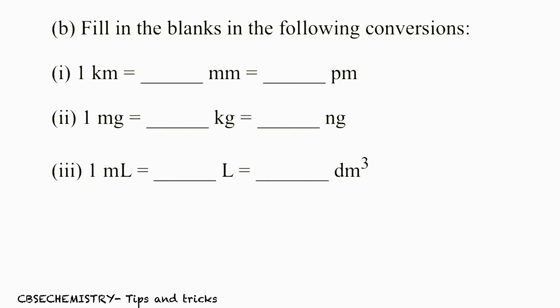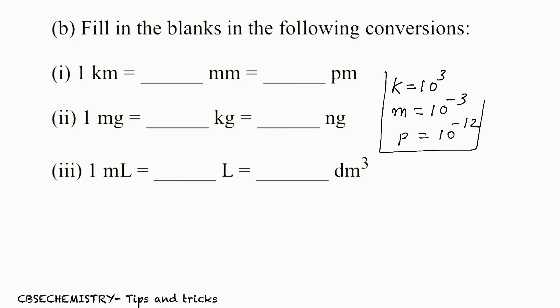For doing this, first of all you must know the prefixes. Kilo means 10 raised to 3, represented by letter K. Milli is 10 raised to minus 3, small letter M. And pico is 10 raised to minus 12. For doing the first question, you must know this data — that is very important.